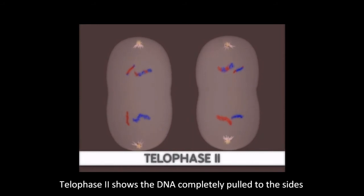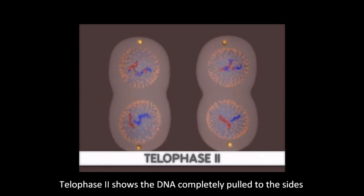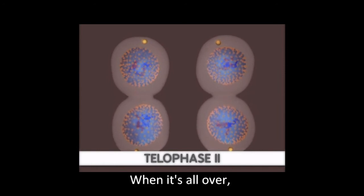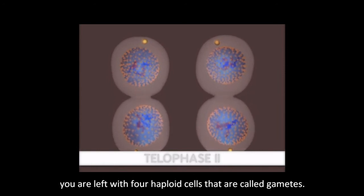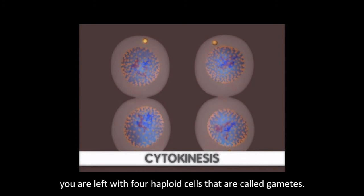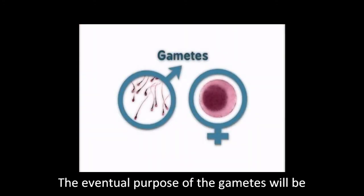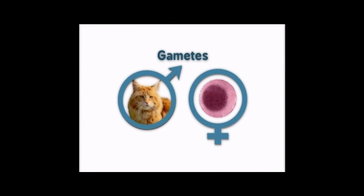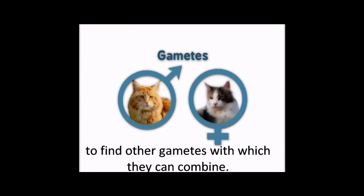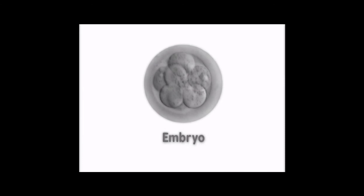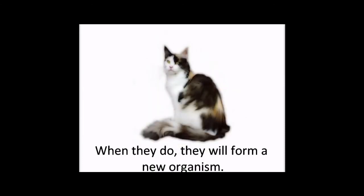Telophase two shows the DNA completely pulled to the sides and the cell membrane begins to pinch. When it is all over, you are left with four haploid cells that are called gametes. The eventual purpose of the gametes will be to find other gametes with which they can combine. When they do, they will form a new organism.